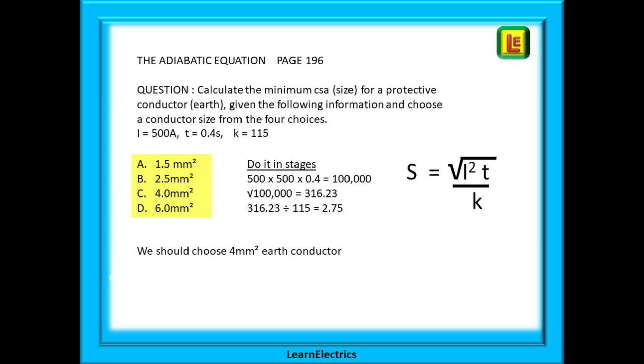Let's have a look at a typical exam question on the adiabatic equation. Calculate the minimum cross sectional area or size for a protective conductor, the earth, given the following information and choose a conductor size from the four choices. The data provided is i equals 500 amps, t equals 0.4 seconds and k equals 115.